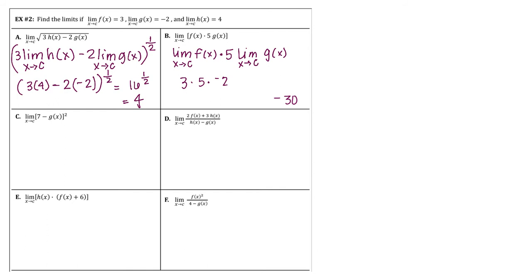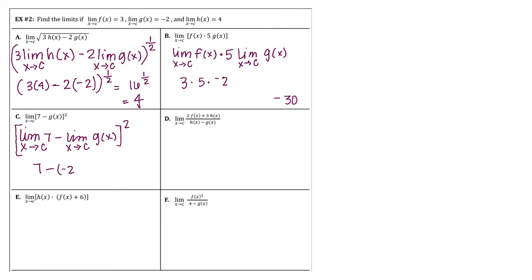For problem C, we have the limit as x approaches c of 7 minus the limit as x approaches c of G of x, all squared. The constant value is 7, minus negative 2, all squared: that's 9 squared, which is 81.